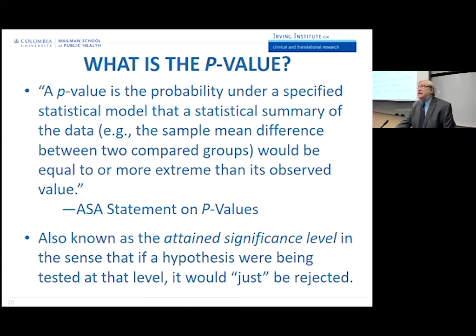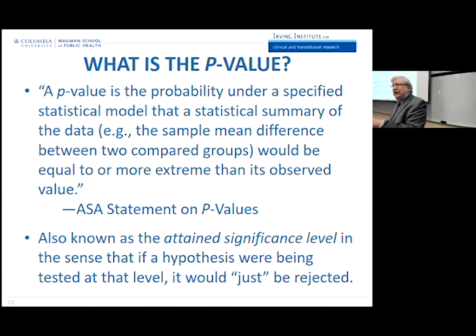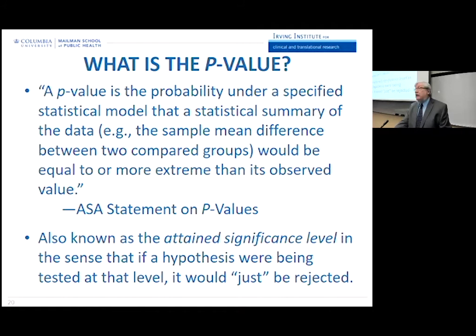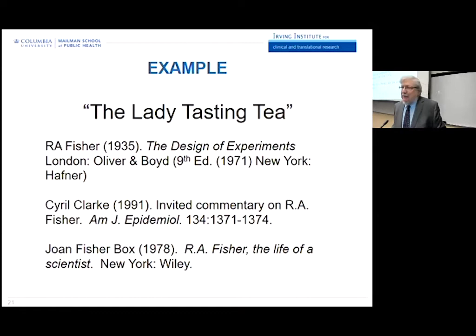It's also known as the attained significance level, because if one were testing a given hypothesis and testing at a level of statistical significance where you would just reject the null hypothesis with your given data, that level of significance the data attained is the p-value. You can think of a p-value as the significance level where you would just start rejecting a null hypothesis. Let's give an example. Many of you perhaps have heard of the famous example of the lady tasting tea.